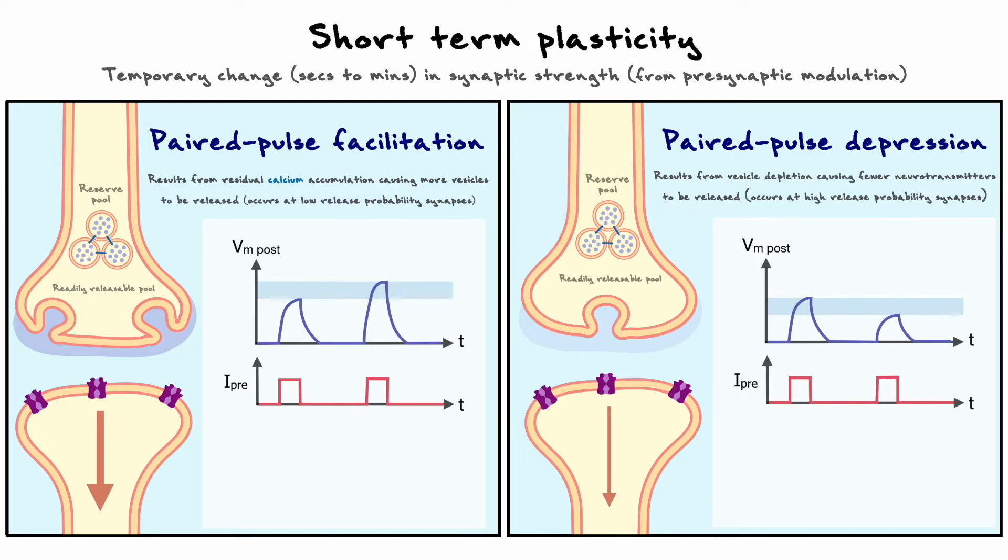You will notice that there is a very important time dependence to these two mechanisms. If the second pulse is delayed too long relative to the first, then the calcium would have time to dissipate and the vesicles would have time to return. So, the timing of the second pulse is critical for these types of plasticity to happen.